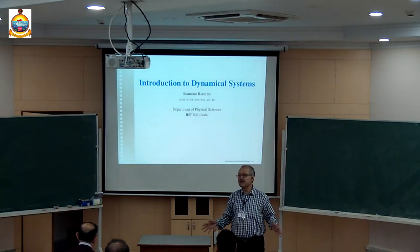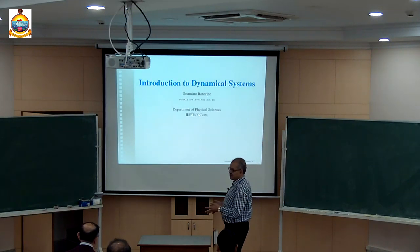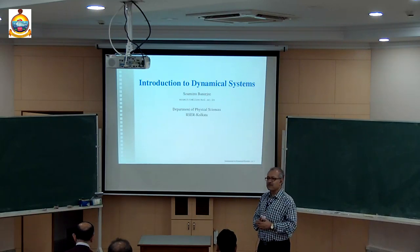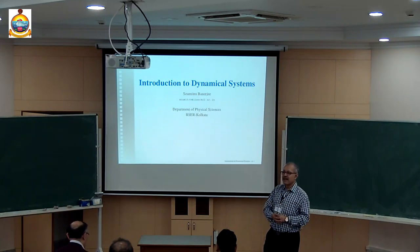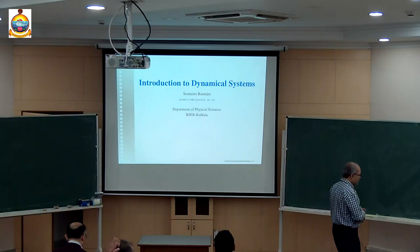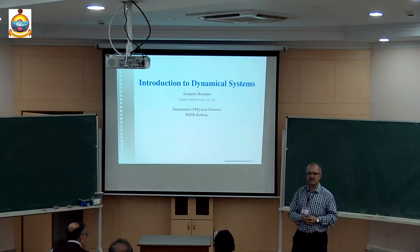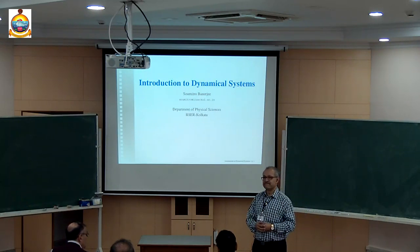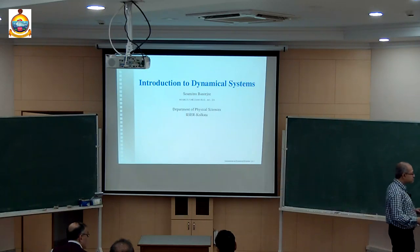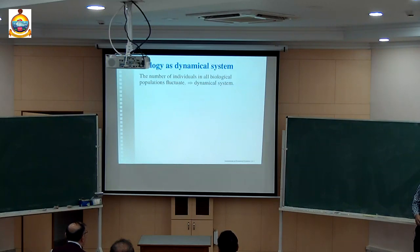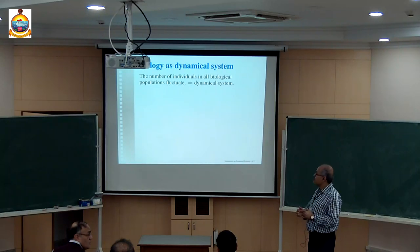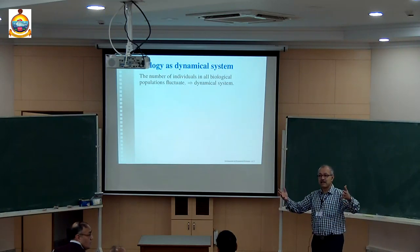Two very elementary ways of representation of dynamical systems are: (a) as differential equations and (b) as maps. Let us start with some examples, and some of my favorite examples come from ecology. Let me illustrate how differential equations are formed, often in a very common-sense way, but leading to quite a few very important results. We can consider ecology as a dynamical system where the number of individuals of a particular species fluctuates — that is a dynamical variable.